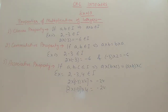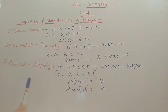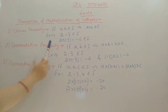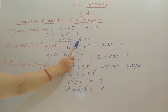After the rules of multiplication of integers, we have properties of multiplication of integers. The first property is the closure property. According to this property, if A and B belong to integers, then their product will also be an integer. For example, 2 and minus 3 are two integers. If we multiply 2 into minus 3, the answer is minus 6, which is also an integer.